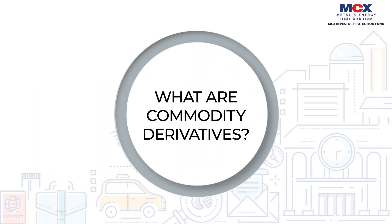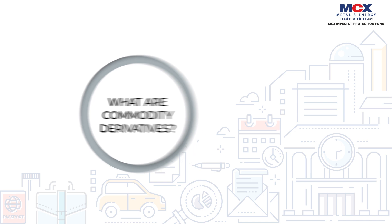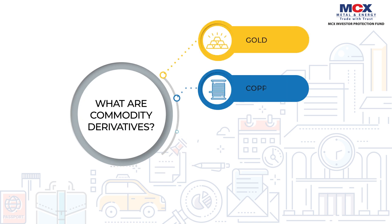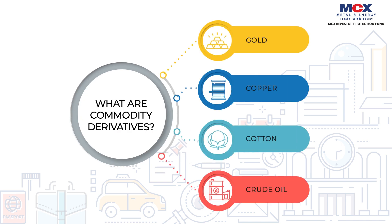What are commodity derivatives? Derivative instruments like forwards, futures, options, and swaps have commodities such as gold, copper, cotton, and crude oil as underlyings. These could be broadly categorized as bullion, base metal, agriculture, and energy.